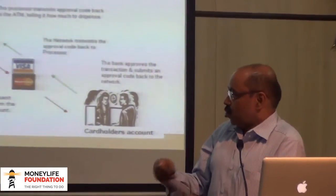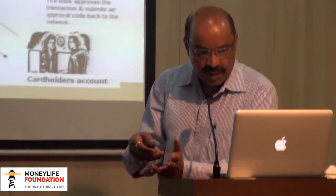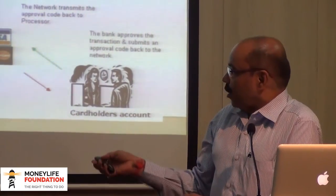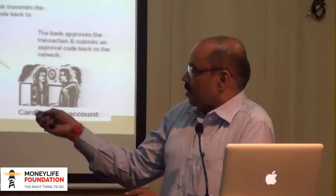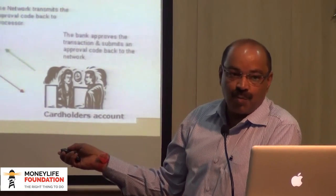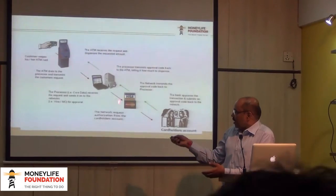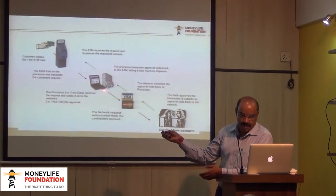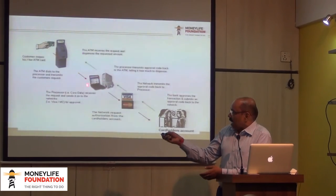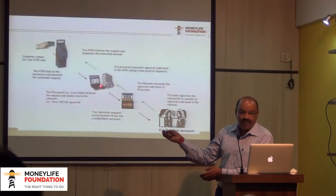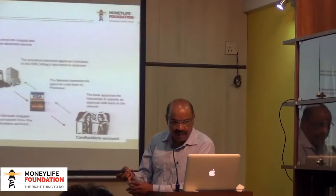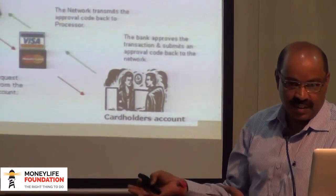There are only two points in this chain where the hack could have happened. Since Visa and Mastercard are very strict about security with vigilance methods, the breach likely didn't happen there. Hackers probably gained access at the processor level and stole user information — card name, card number, and possibly the PIN. However, only about 700 customers were reported affected, so we are not sure if PINs were also stolen.